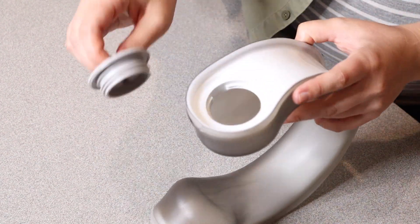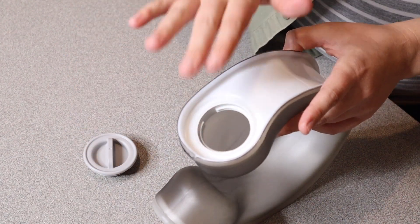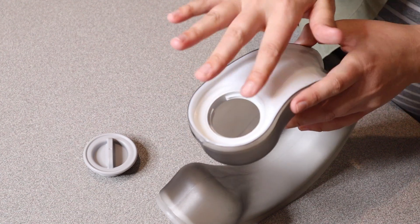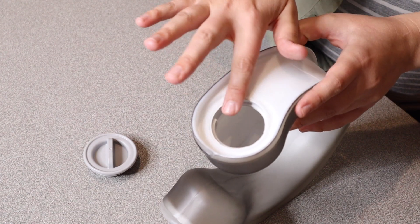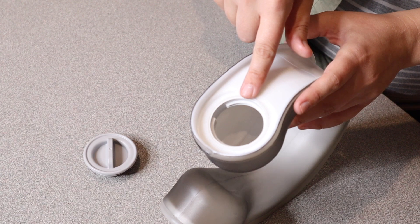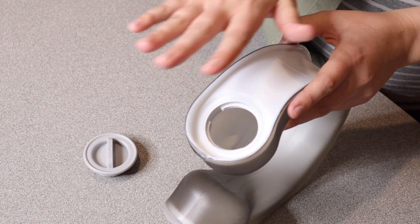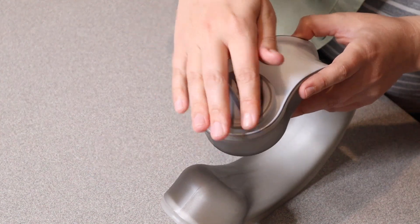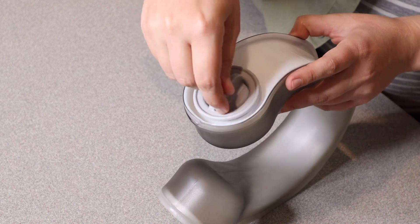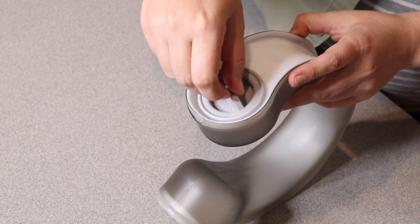Another way you can use this is to unscrew this closure and add cold or ice water. The recommended ratio is six parts ice to four parts water, but you can adjust that to your specific needs. Then just tighten this, wipe off any excess water, and use it right away.